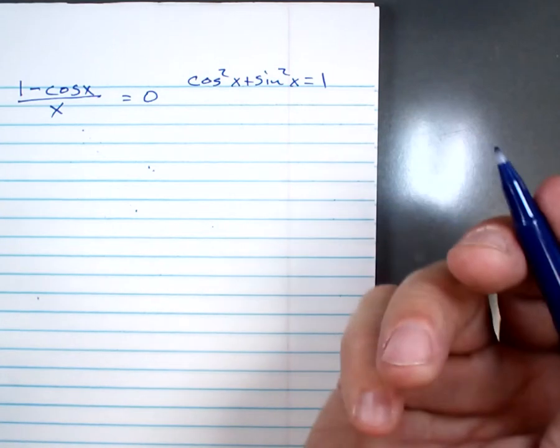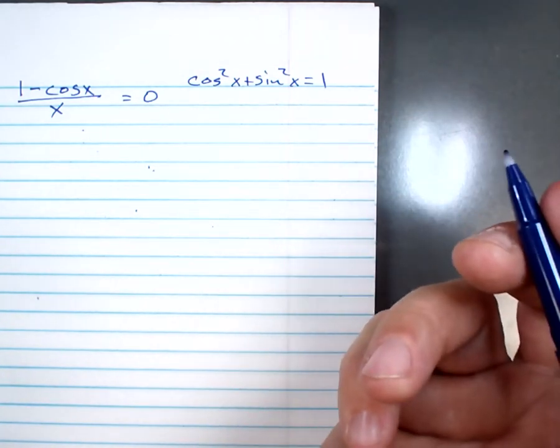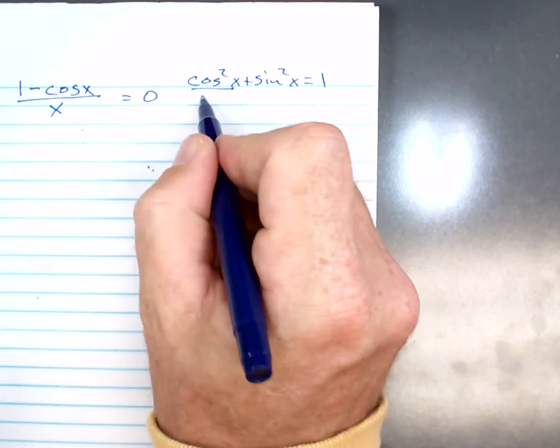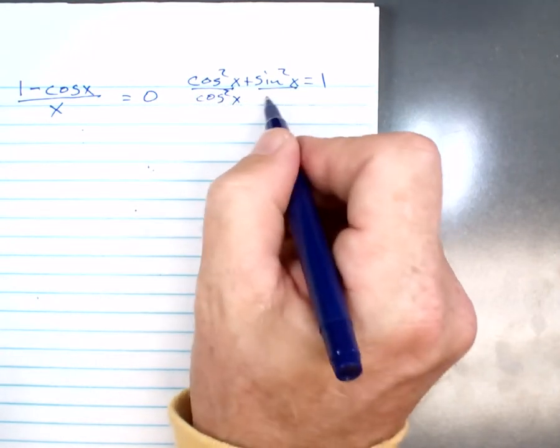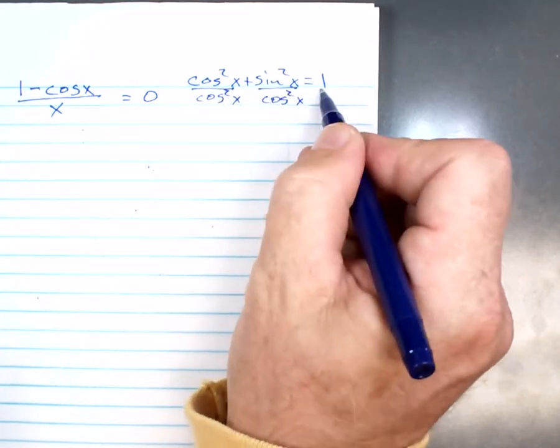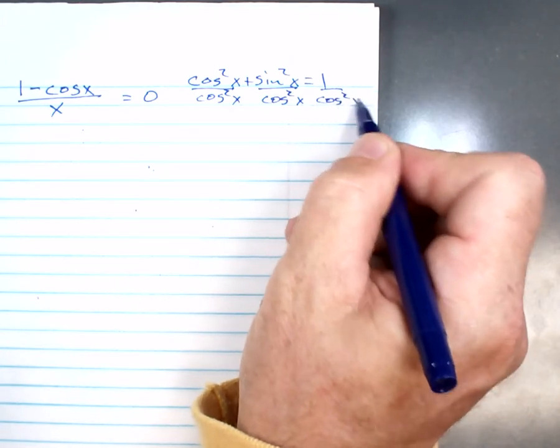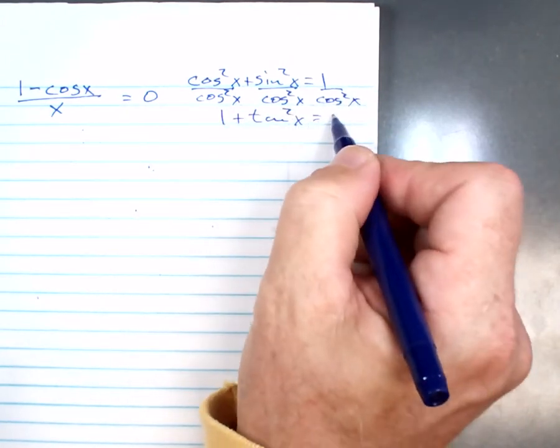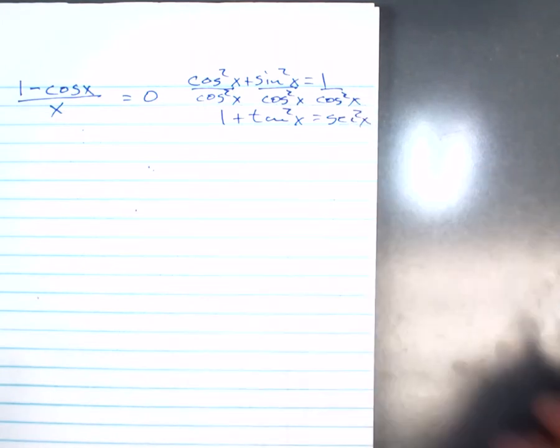And so I can get a whole bunch of things from this. I can get this, that if I divide both sides by cosine squared x, I can get 1 plus tangent squared x equals secant squared. You've seen that?